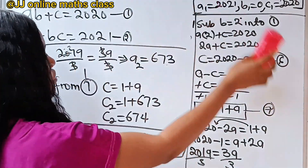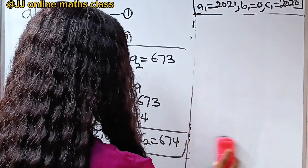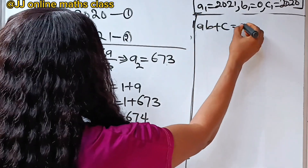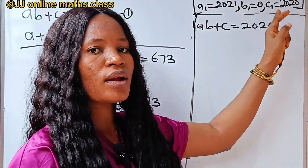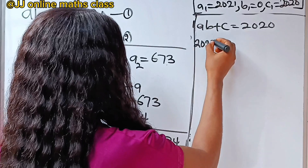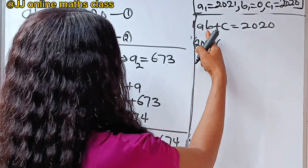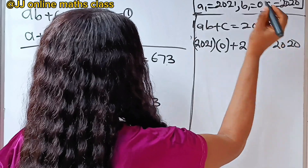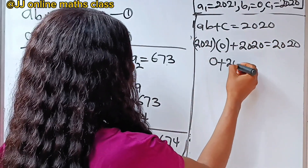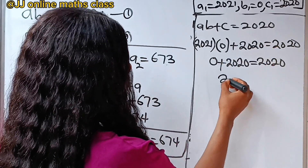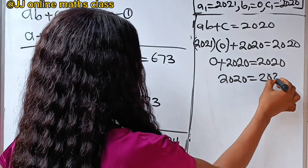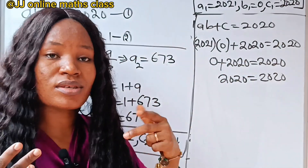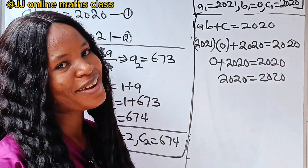Let's check by substituting into equation 1. Equation 1 says A times B plus C equals 2020. For A1, B1, C1: 2021 times 0 plus 2020 equals 0 plus 2020 equals 2020. This is correct. You can also substitute into the second equation and it will still be right. Thank you so much for watching. Have a lovely day.